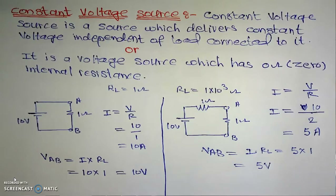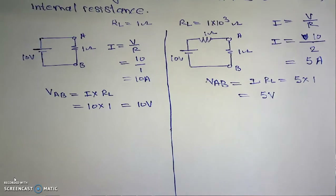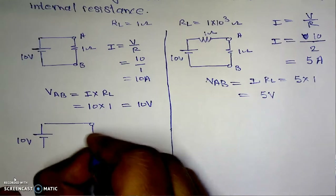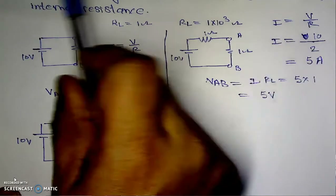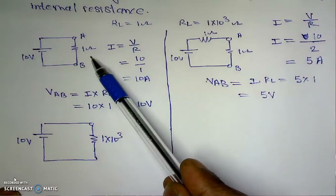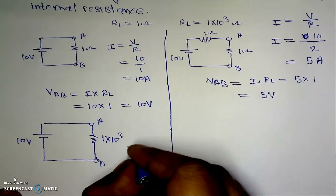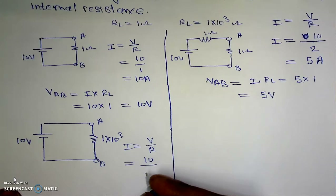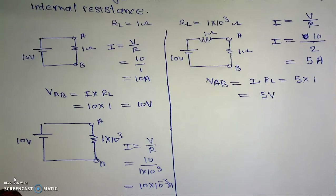Now we use the second load resistance of 1 kilohm. For the first case (zero internal resistance), the current I = 10 / (1×10³) = 10×10⁻³ amperes, that is 10 mA. The terminal voltage VAB = I × RL = 10×10⁻³ × 1×10³ = 10 volts.